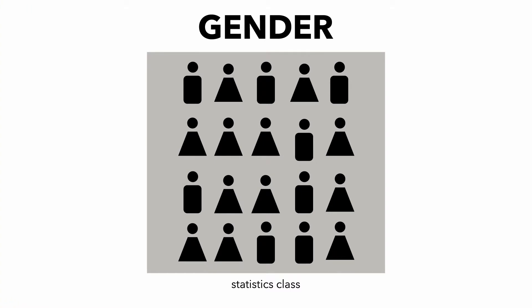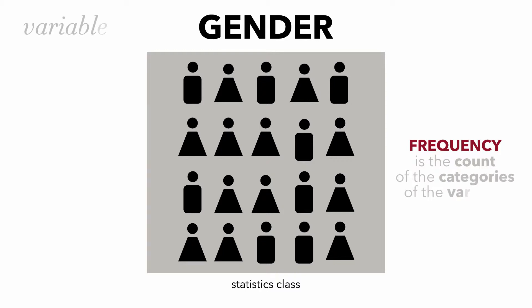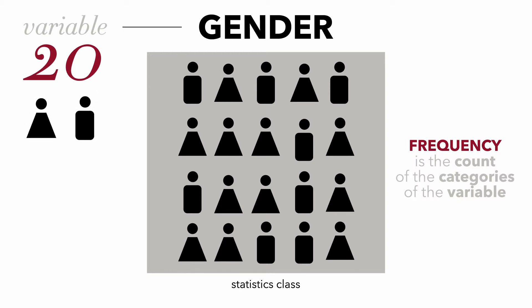Suppose I have data on gender. I have data from a statistics class that has 20 students in it, and I've recorded their gender. We want to calculate the frequency distribution for the variable gender. Our variable has two characteristics — male and female — two attributes. Frequency is simply a count of the categories of the variable, and we have two categories: male and female.